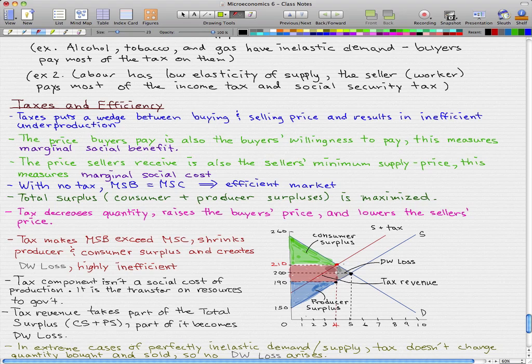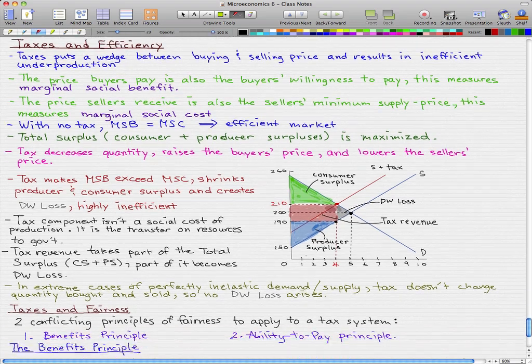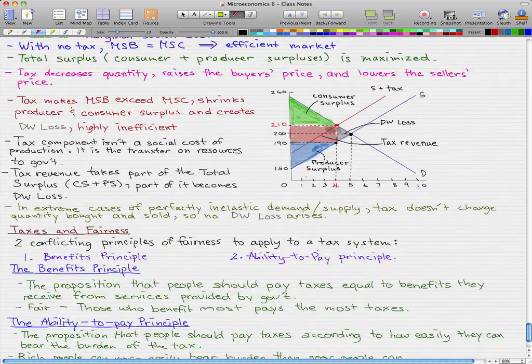In extreme cases of perfectly inelastic demand or perfectly inelastic supply, the taxes doesn't change the quantity bought and sold, so no deadweight loss arises.